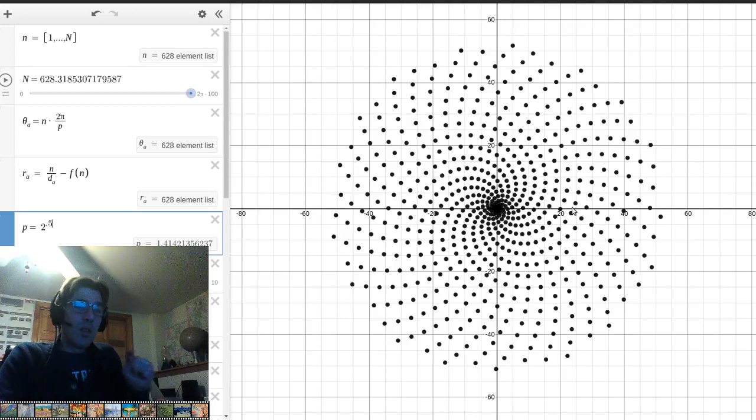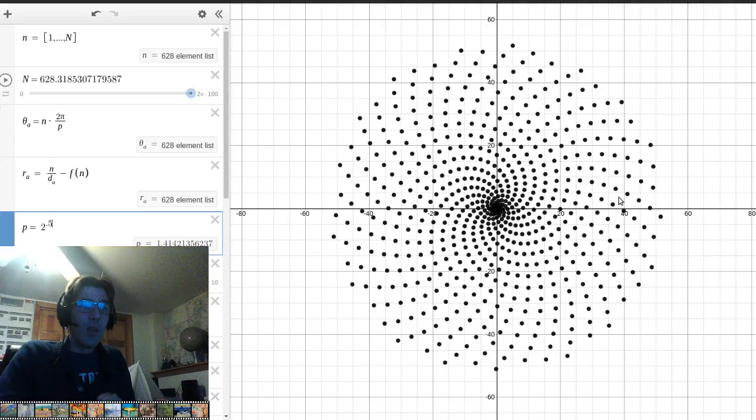When I split the circle in 3, then it cycles around on itself. When I split it into an irrational number, it doesn't quite cycle around on itself, but it can look like it is.